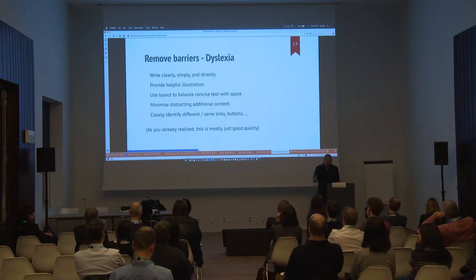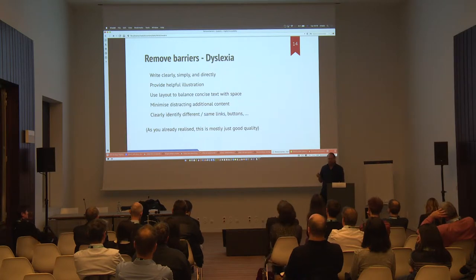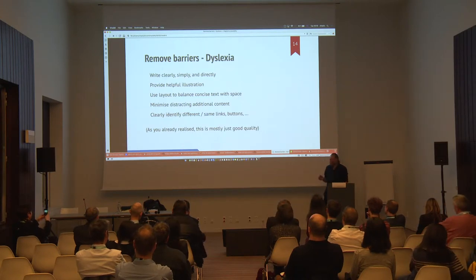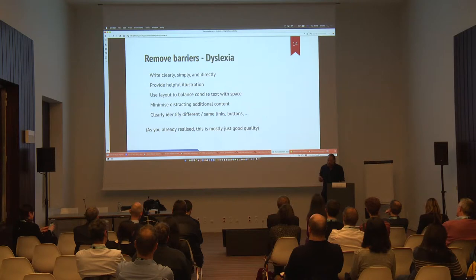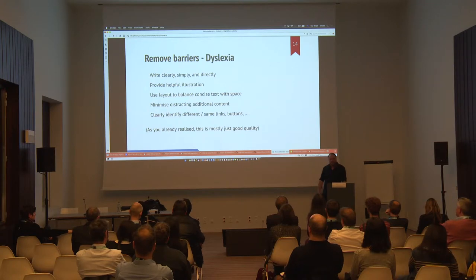So think about some concrete things. For people who have dyslexia, and there are lots of them: write clearly, simply, and directly. This, of course, is what the European Union is famous for. But there are people around the European Union, the Commission, the European Parliament, and various other places who know how to do this, who work on it for a living, and who do it very successfully. So if you're producing great screeds of complicated text and you're not talking to them, you're probably doing something wrong.